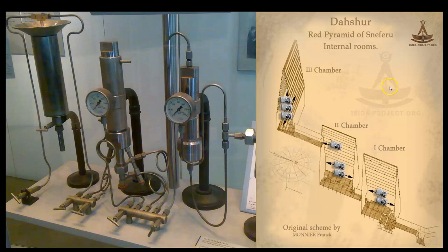Moving right along to the Red Pyramid of Dashur — my theory is that the Red Pyramid was designed to produce an ammonia solution. We are going to compare that reaction to the modern day process for ammonia production, which is a process called the Haber process. Let's review the manufacturing process inside of the Red Pyramid.